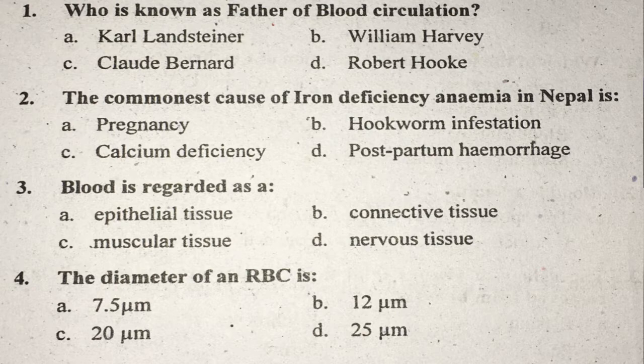Question number four: What is the diameter of an RBC (red blood cell)? The right answer is 7.5 micrometers.